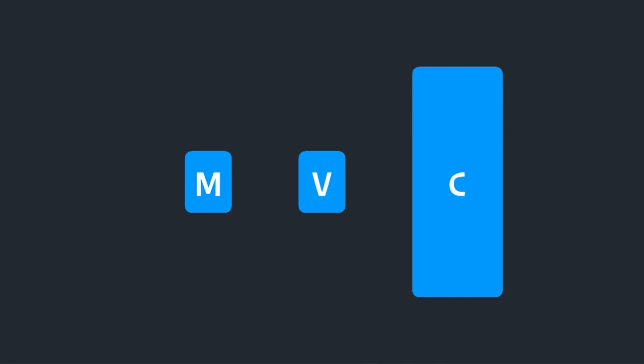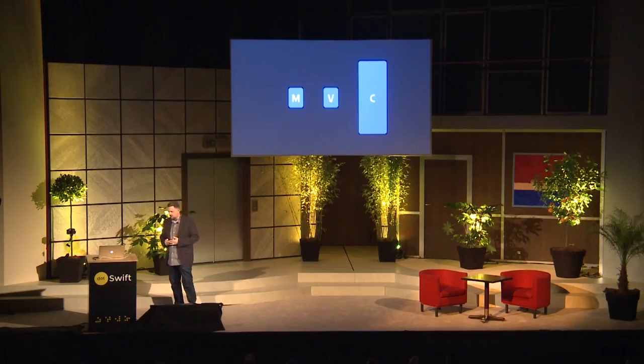You may not recognize the pattern behind me, but you might recognize this one where we have a pretty good idea of what goes in the model — these are the domain entities and the important state about our application's objects. And in the view, this controls the rendering and the display logic, the layout, and the custom graphics that correspond to how we want the information to be displayed.